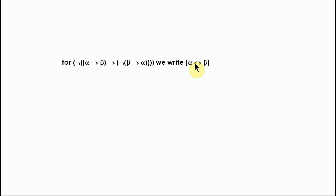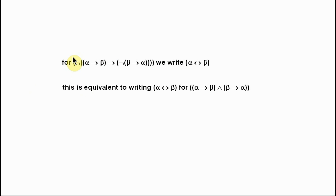Now, I've introduced this double-headed arrow as a shorthand defined in terms of the primitive connectives. But now that we have these rules for omitting parentheses and the other connectives introduced by definition, we can see that this expression can itself be simplified using one of our other connectives introduced by definition. At this point, having seen these new connectives introduced by definition using long strings of symbols formed as wffs, you may be asking yourself why these particular definitions have been set out in this way.